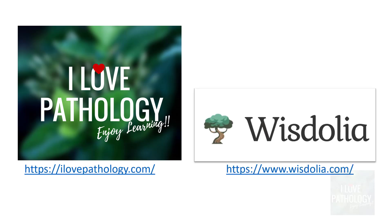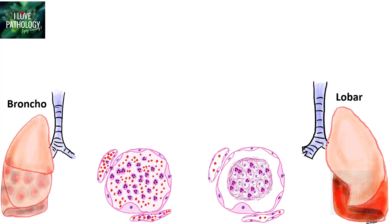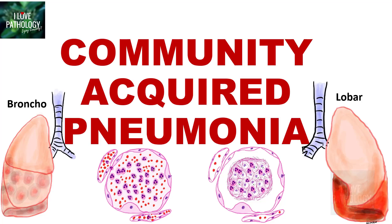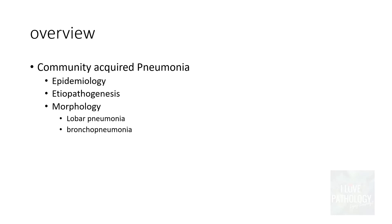Hello everyone, welcome back to this short tutorial from Pathology Made Simple at ilopathology.com, supported by Viljolia. In continuation with the pneumonia series, I will be talking about a very important type of pneumonia: community-acquired pneumonia. We will see the epidemiology, the etiopathogenesis, and the morphology of community-acquired pneumonia, particularly the differences between lobar and bronchopneumonia.